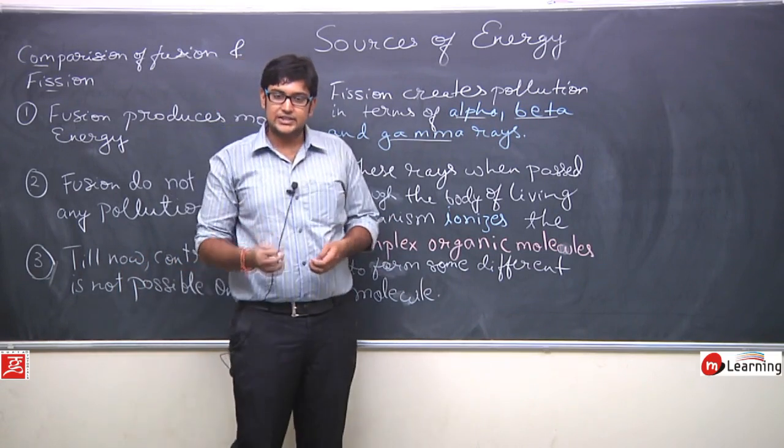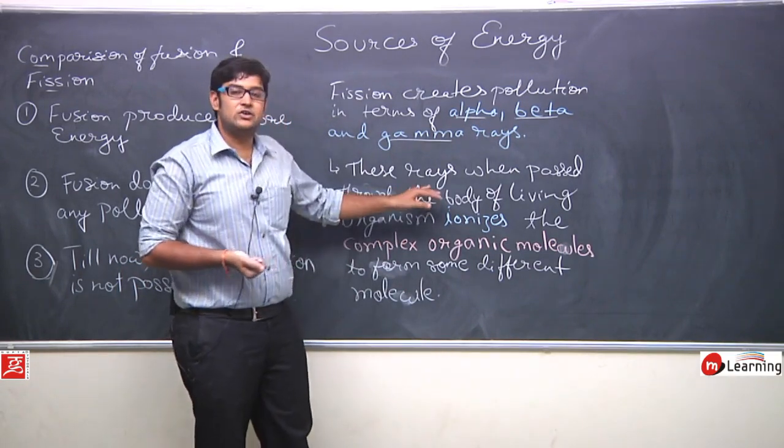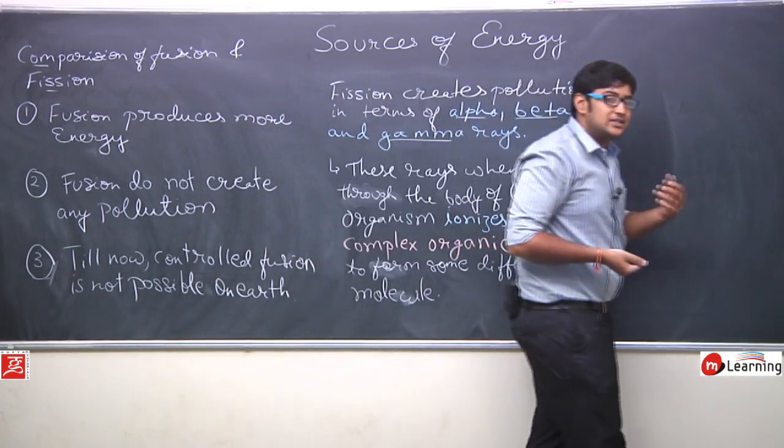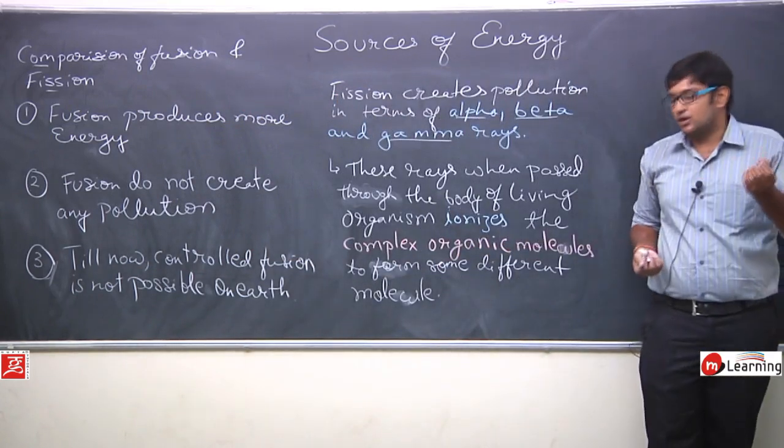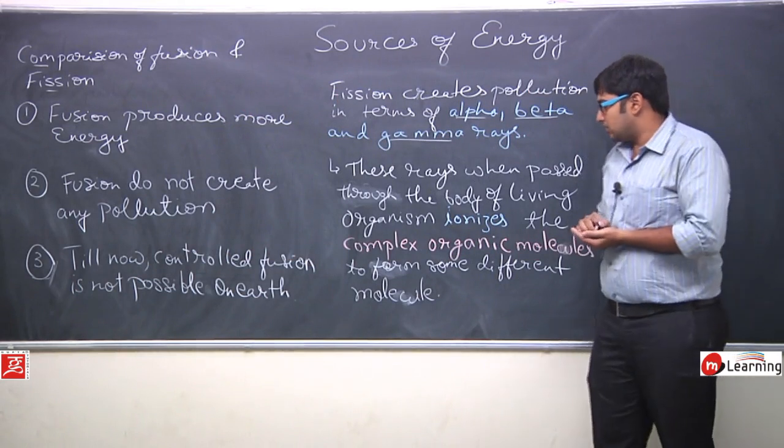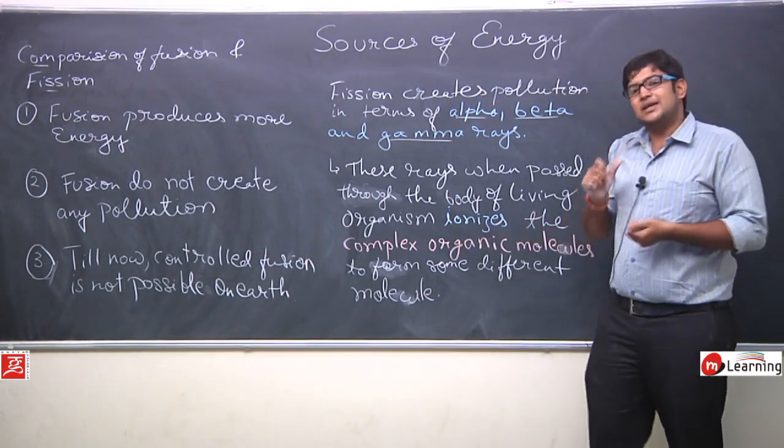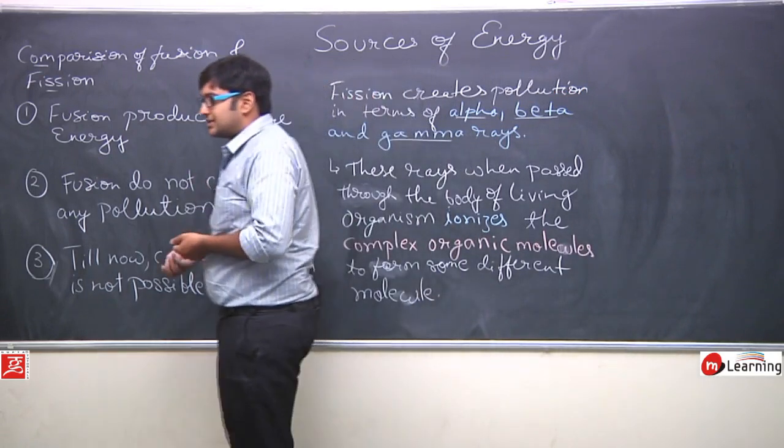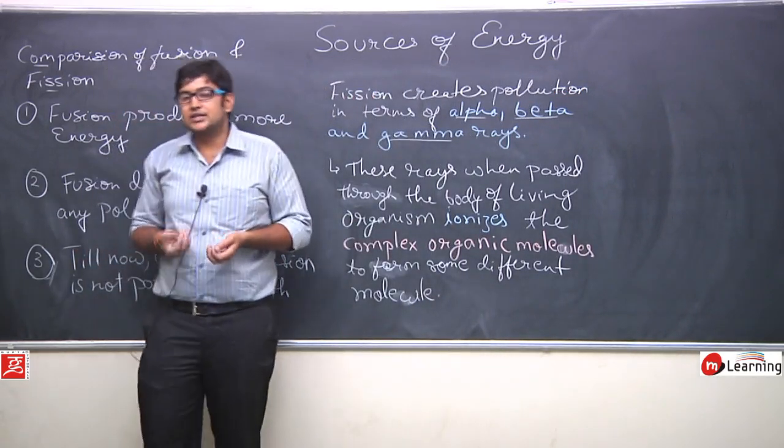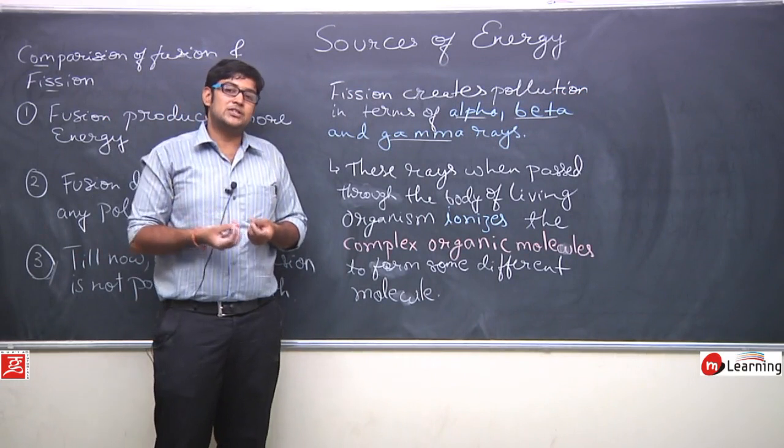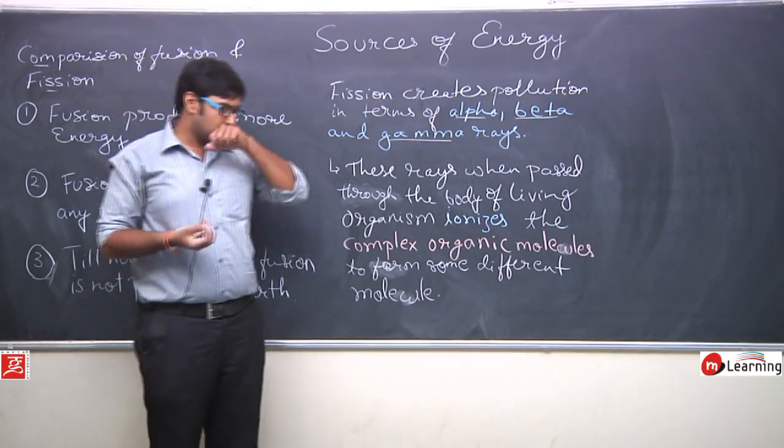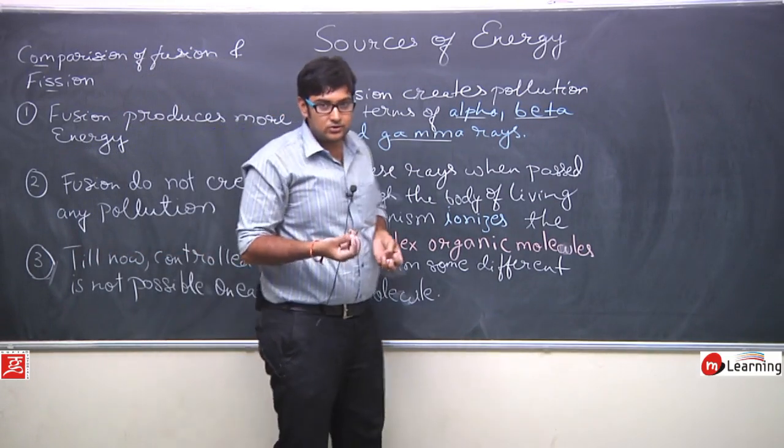Yaha rays kya karti hain? Yaha rays jab si living organism ki body se pass hoti hain, so they will ionize the complex organic molecule. What is exactly mean by the complex organic molecule? Complex organic molecules ka matlab hota hai proteins, fats, carbohydrates. Yaha sabhi kya hain? Yaha sabhi complex organic molecules hain. Organic means jo living beings ke andar hota hai. So these are complex organic molecules.